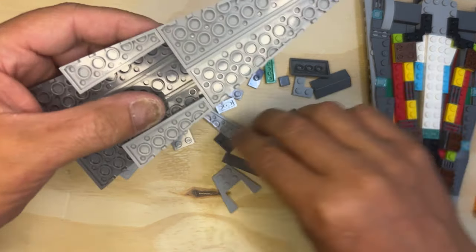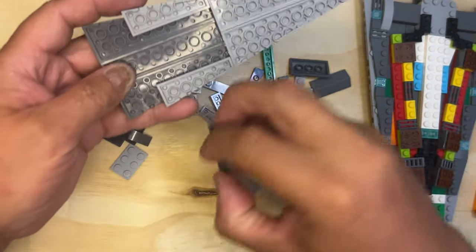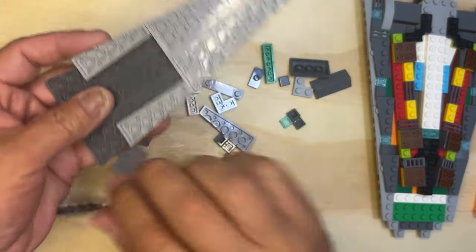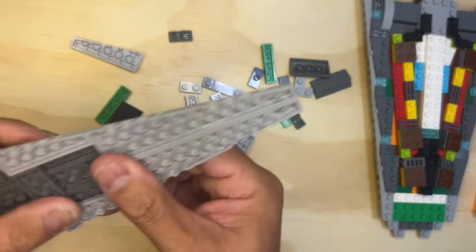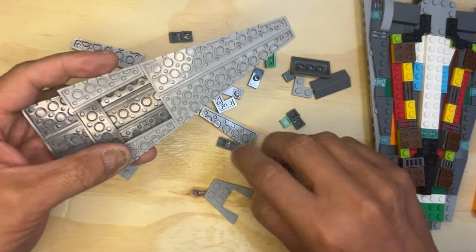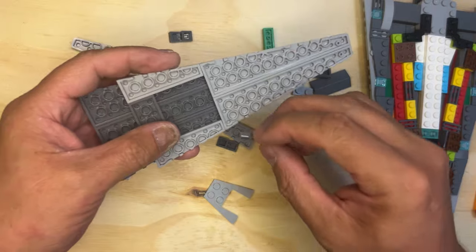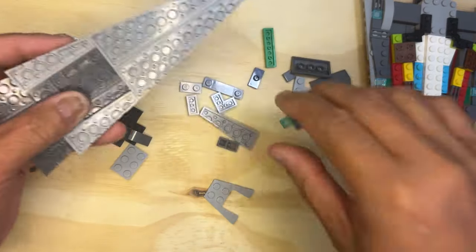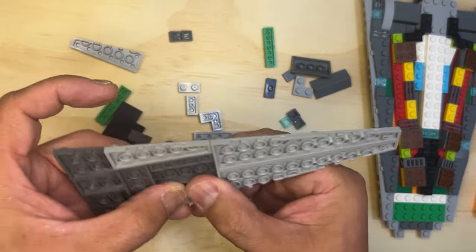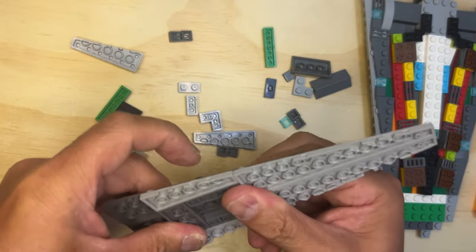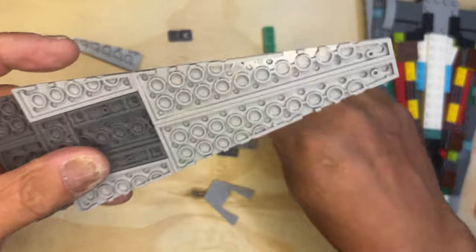So I need two of those, so I need this right here. Okay, and then I need one of these like this. And then I need another one of these like this.